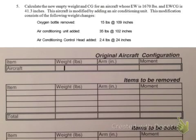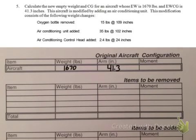Moving to problem 5, this one is about adding and removing items from the aircraft. The word problem already gives you an empty weight and an arm — 1670 pounds and 41.3 inches. Go ahead and write those in on the sheet for adding and removing, which is different from the first empty weight sheet. Multiply those to get a moment.